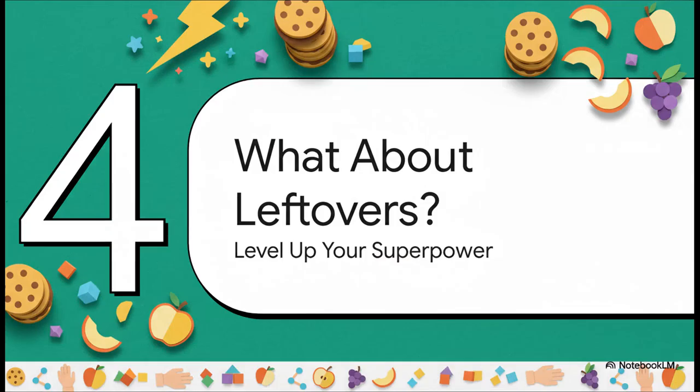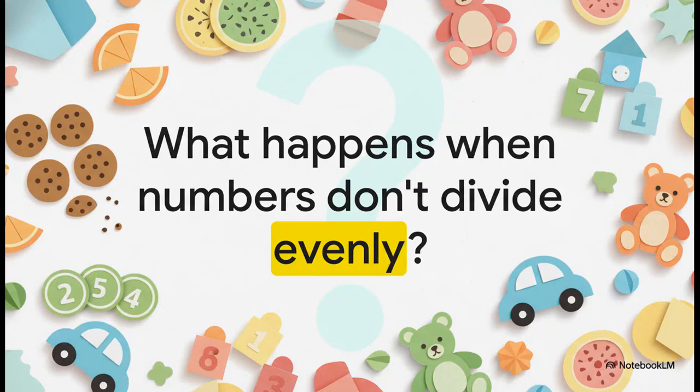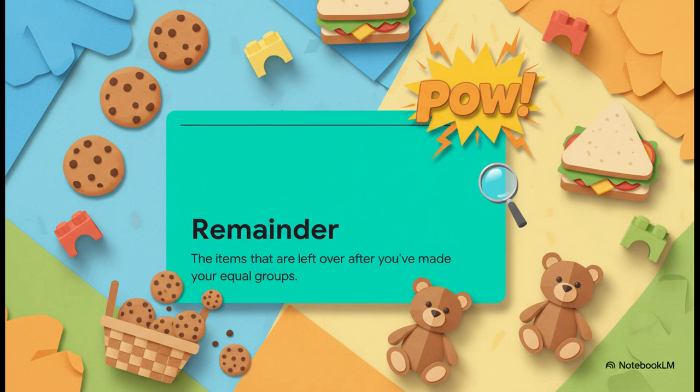Are you ready to level up? Because sometimes in life and in math, things just don't split up perfectly — and that is totally okay. Let's talk about leftovers. What do you do when you've shared everything out as fairly as you can, but there's still a few things left over? The answer has a special name: the remainder. A remainder is just the word we use for those extra items — the ones left over after you've made all your equal groups.